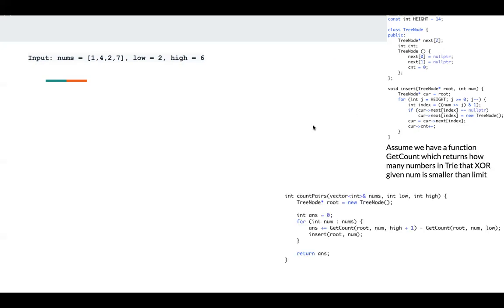The most important part here: I assume we have function getCount, which returns how many numbers in Trie that XOR given number is smaller than limit. If we have this function, then we can write code like this.